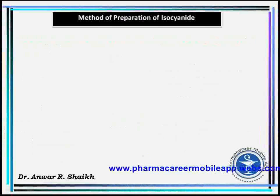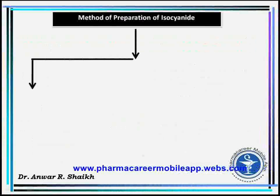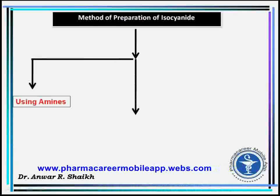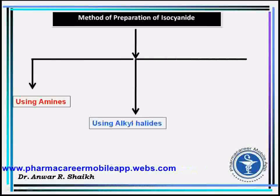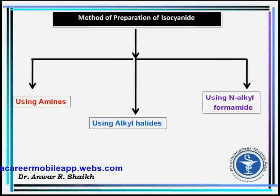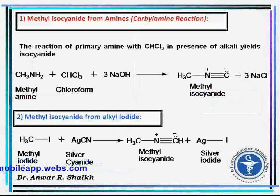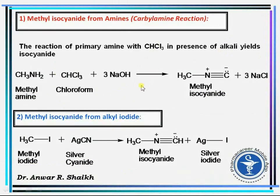Methods of preparation of isocyanides: using amine, using alkyl halides, and using N-alkyl formamide. Using an amine, the reaction of a primary amine with chloroform in the presence of alkali yields isocyanides. Using alkyl iodide (alkyl halide) in the presence of silver cyanide gives methyl isocyanide.